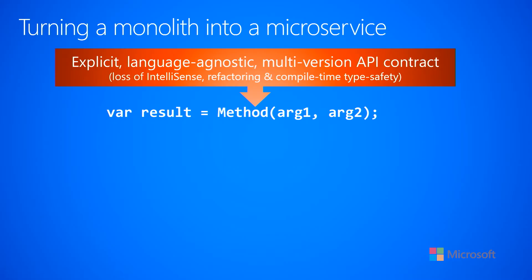When you go and make a contract like this over the network, you're going to lose certain language features. You tend to lose things like IntelliSense support and refactoring — if you rename a method and want to rename all calls to it, you can't do that easily anymore. A big thing you lose is compile-time type safety. You can get some of this back by creating client libraries, but that's additional work, and you have to keep those libraries in sync with your network API contract.